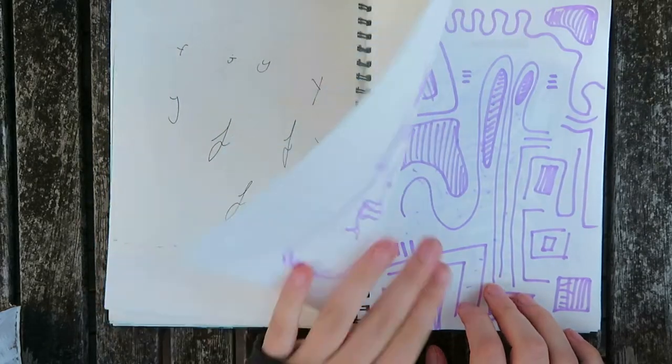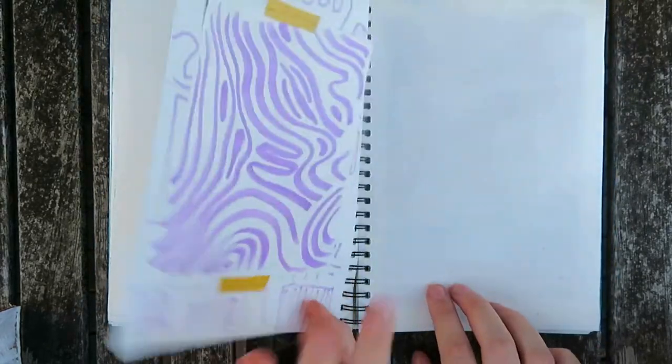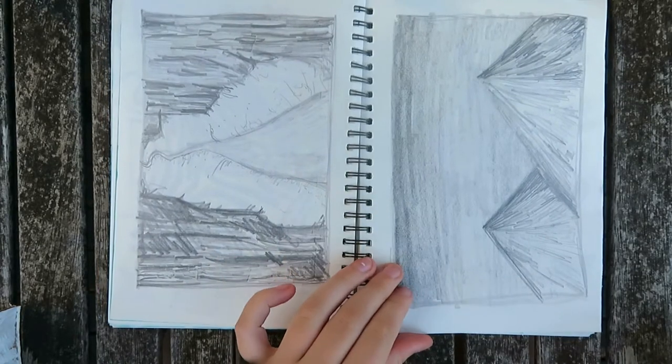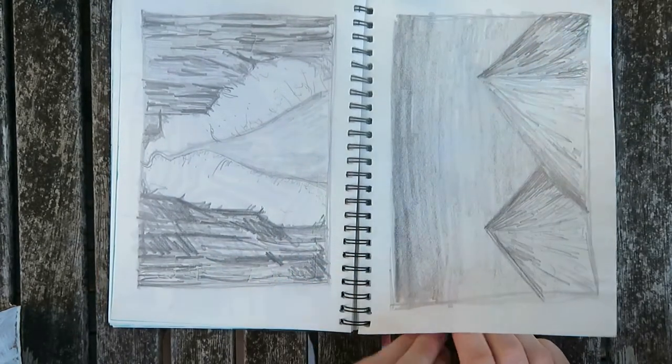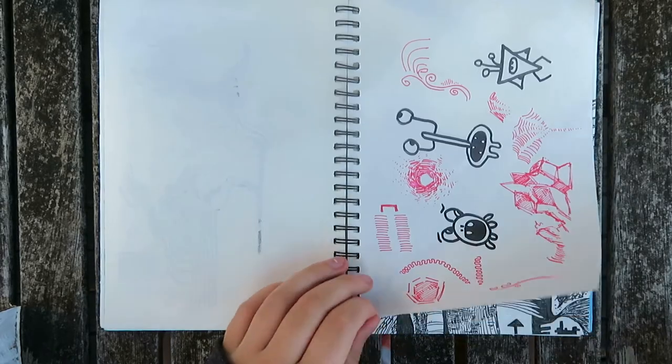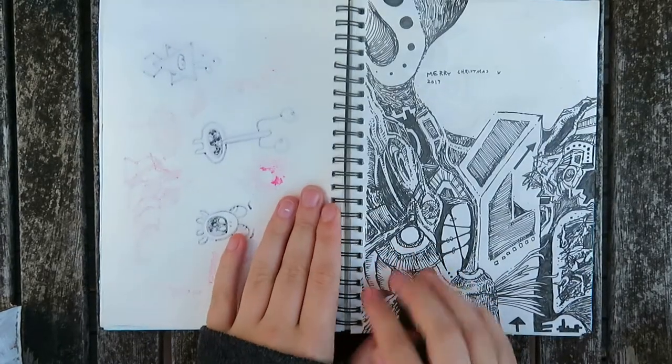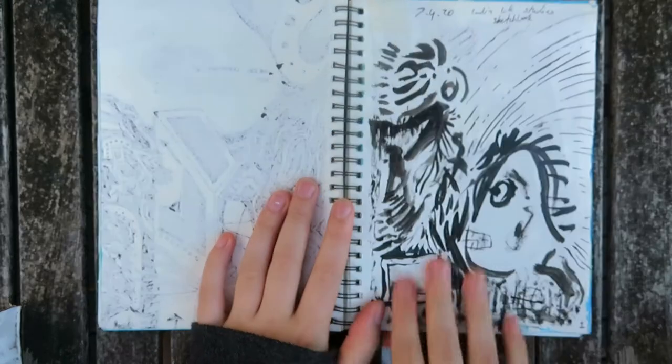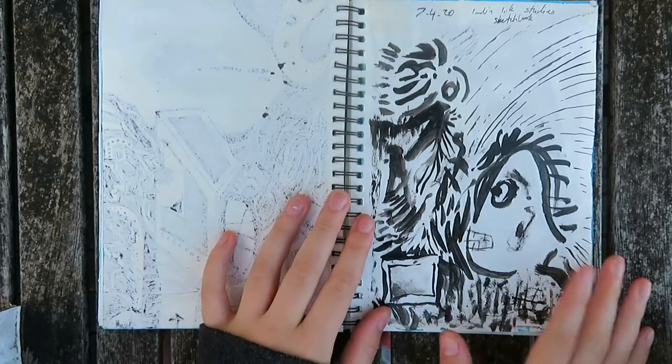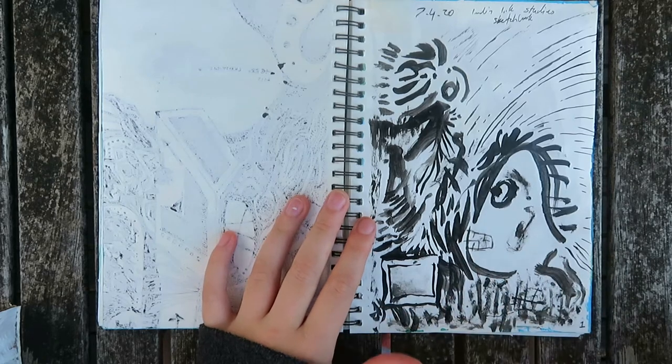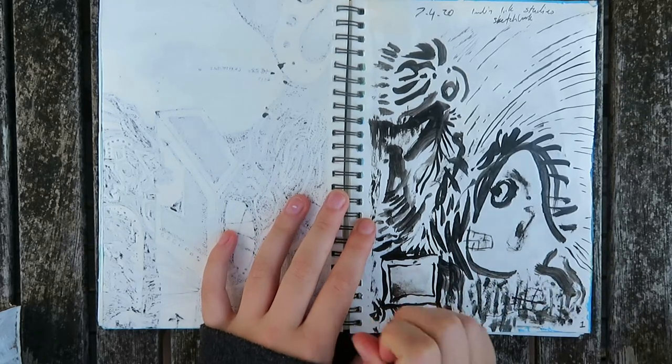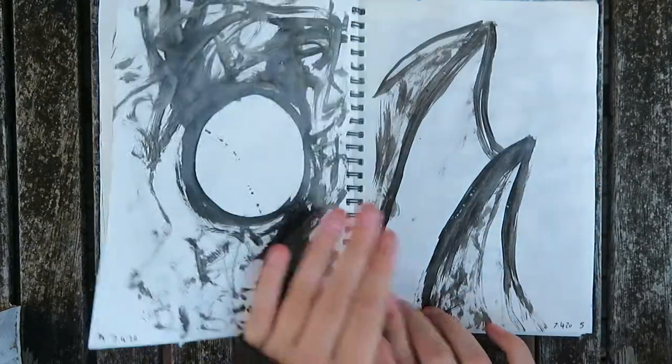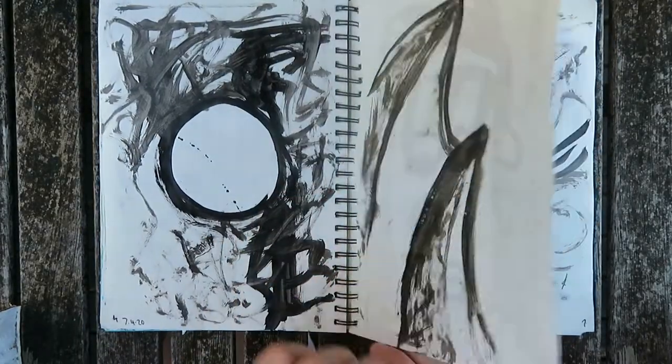And then here we're sort of moving into slightly more recent stuff. The main thing that I did with the sketchbook was a sketchbook intensive thing for my uni course, where we take one theme or idea. So in this case, I did all of these with India ink and a paintbrush, and then we just developed ideas throughout the duration of it. So I think this goes for about 30-something pages.